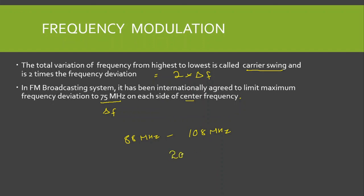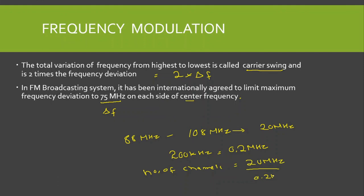The channel bandwidth is 200 kilohertz, which is 0.2 megahertz. The total FM band range is 20 megahertz, so the number of channels is 20 MHz divided by 0.2 MHz, which gives 100 channels. These 100 channels can be allotted to a specific region using the frequency reuse concept, similar to cell splitting in communications. This was all about the frequency modulation; we will discuss the FM broadcasting system in greater detail in coming lectures.